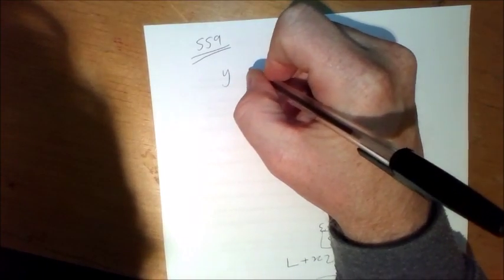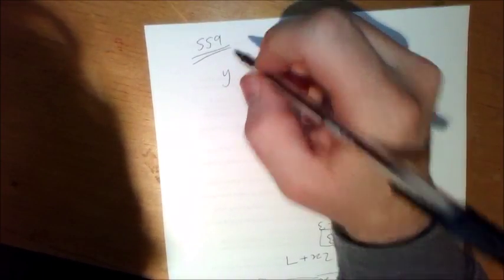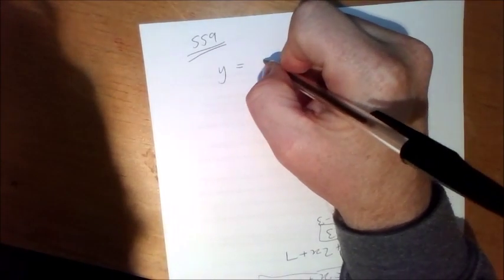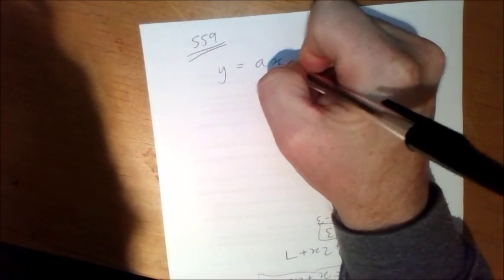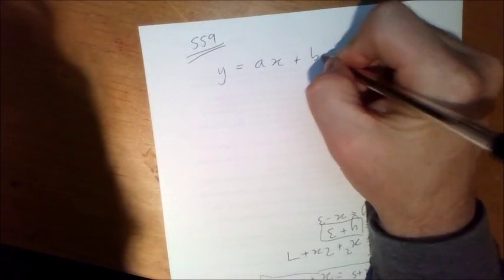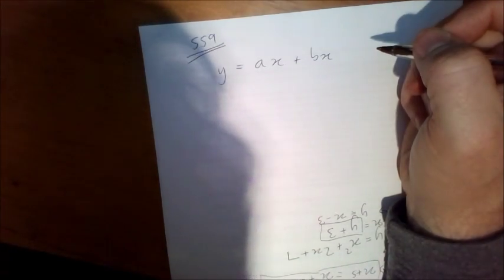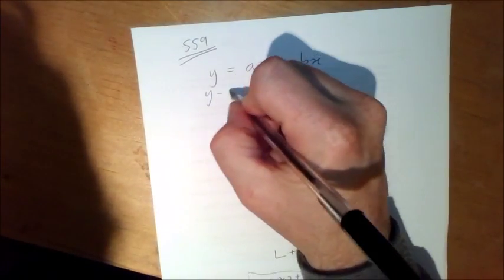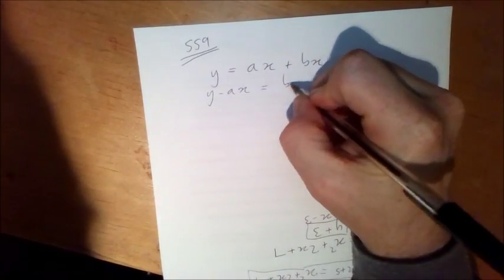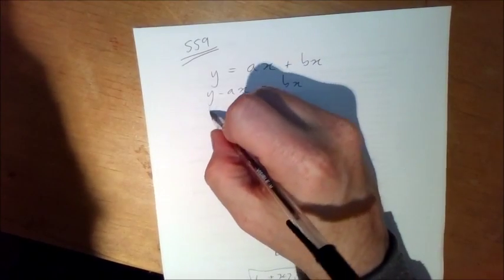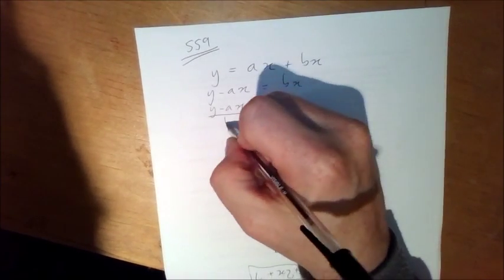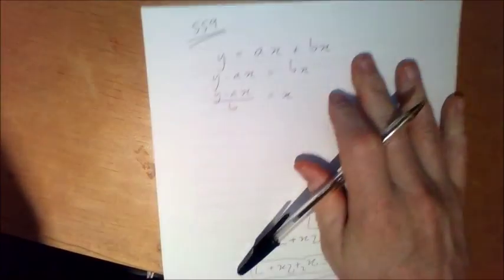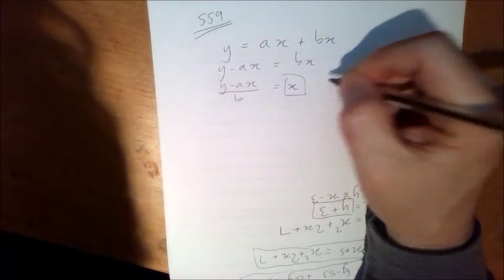So let's say your job in this question here is to get x by itself or make x the subject. Then you could go like this and divide both sides by b, and you'd think that you're done because you have x by itself.